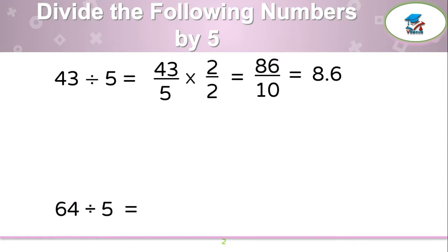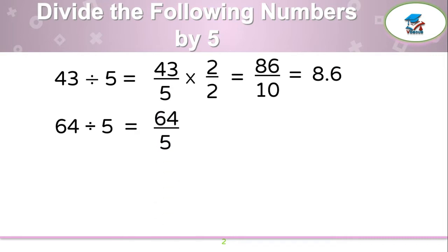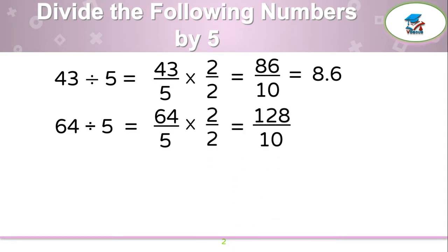Let us take one more example: 64 by 5. Write 64 over 5, which should be multiplied by 2 over 2. 64 times 2 is 128, and 5 times 2 is 10, and your answer will become 12.8.